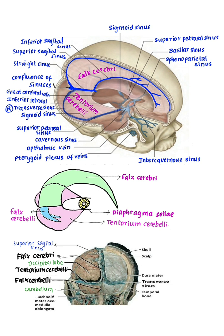Diaphragma Sellae is the fourth fold of dura mater. It is attached anteriorly to the tuberculum sellae and posteriorly to the dorsum sellae. It has a central aperture for the passage of the stalk of the pituitary gland.